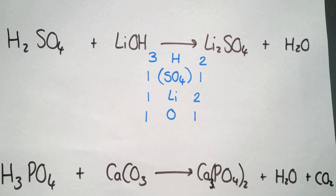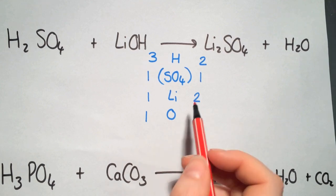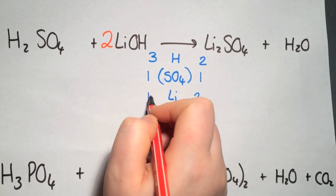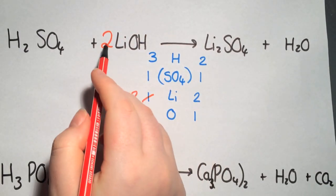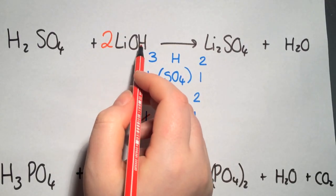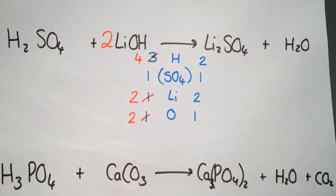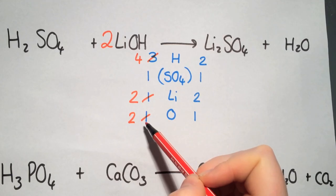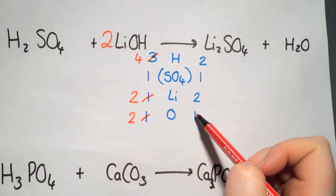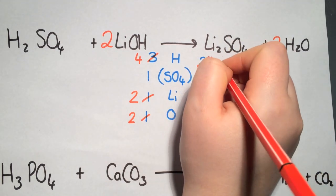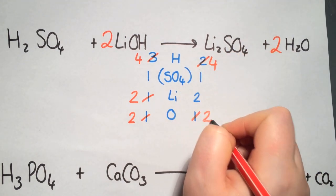Looking at lithium first as the metal, we need to multiply it by two to balance, so a large two in front of that product. That gives us two lithiums, multiplies the oxygen by two, and also adds an extra hydrogen giving four hydrogens in total. We now have the same situation as before — four hydrogens and two oxygens on one side, but only two and one on the other — so put a large two in front of the water to multiply that up.